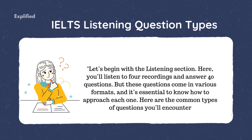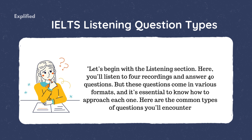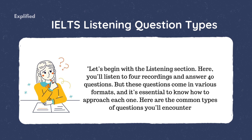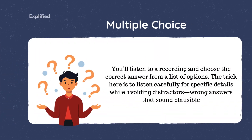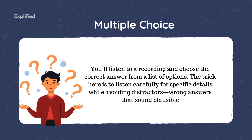Let's begin with the listening section. Here, you'll listen to four recordings and answer 40 questions, but these questions come in various formats, and it's essential to know how to approach each one. Multiple Choice: you'll listen to a recording and choose the correct answer from a list of options. The trick here is to listen carefully for specific details while avoiding distractors — wrong answers that sound plausible.